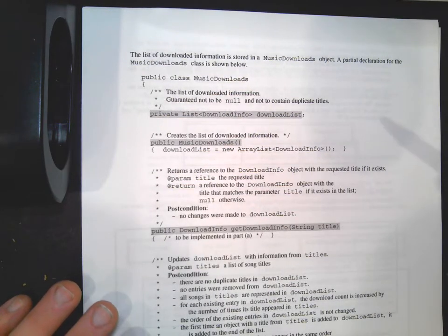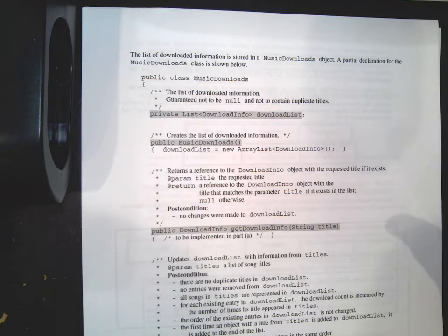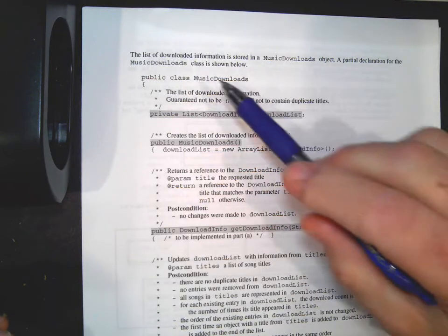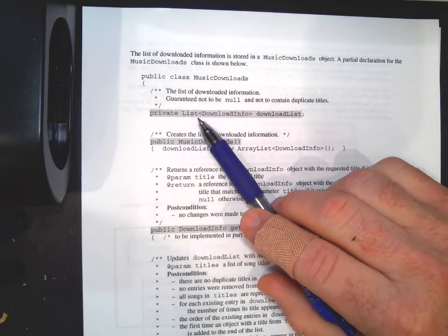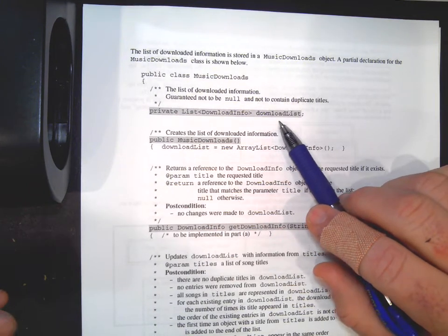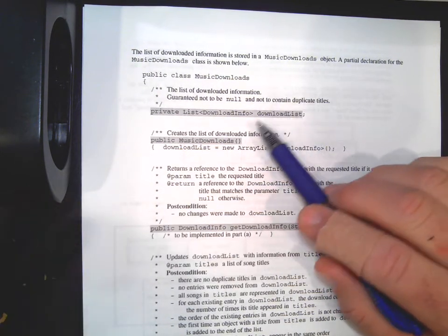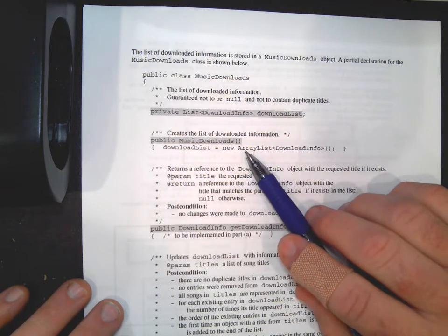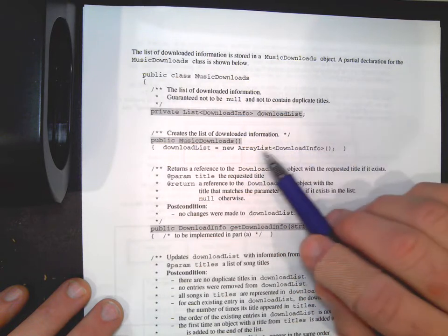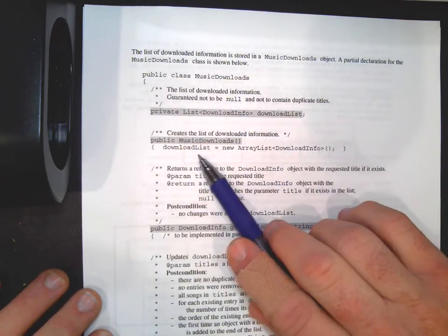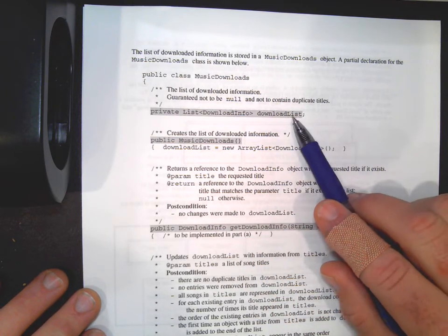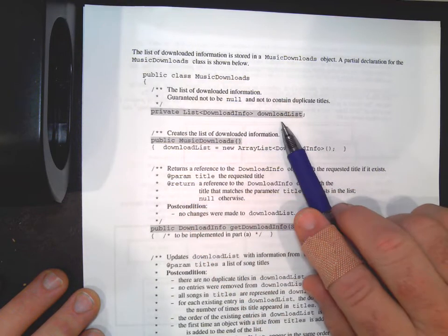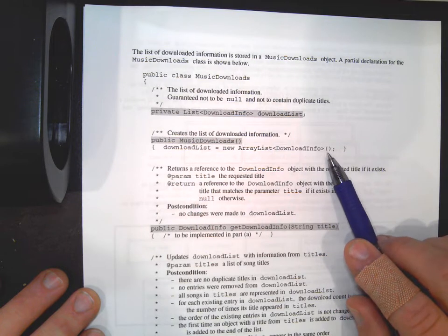A list of downloaded information is stored in a MusicDownloads object. This is a separate class that contains a list of downloaded songs. The partial declaration shows: public class MusicDownloads with a private instance variable - a list, like an ArrayList, which they call downloadList. Use the same names they're using - don't change variable or method names. The constructor takes no arguments, it just initializes a brand new empty ArrayList.